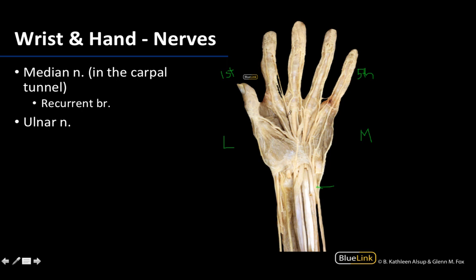All of these small branches going toward the deeper intrinsic hand muscles — we're not having you identify those small branches. We would focus more on the bigger bulk of the ulnar nerve. The only small branch you need to know within the intrinsic hand region is the recurrent branch of the median nerve. To review: the median nerve is more in the middle of the forearm as it traverses through the carpal tunnel, sending off the recurrent branch to supply the thenar compartment. The ulnar nerve will always be on the medial side, identifiable by the fifth digit, and sends branches to the rest of the intrinsic hand muscles.